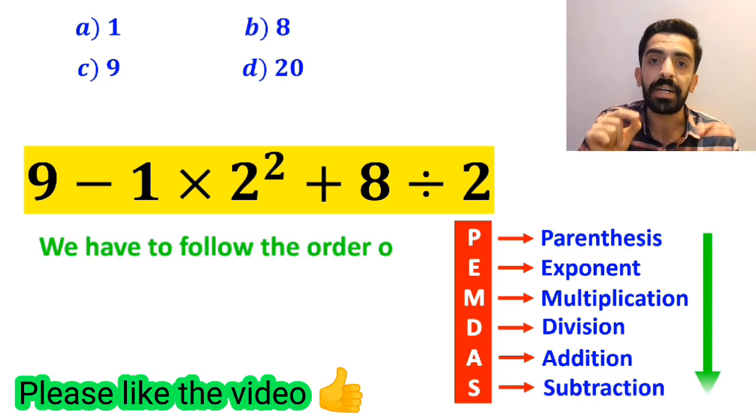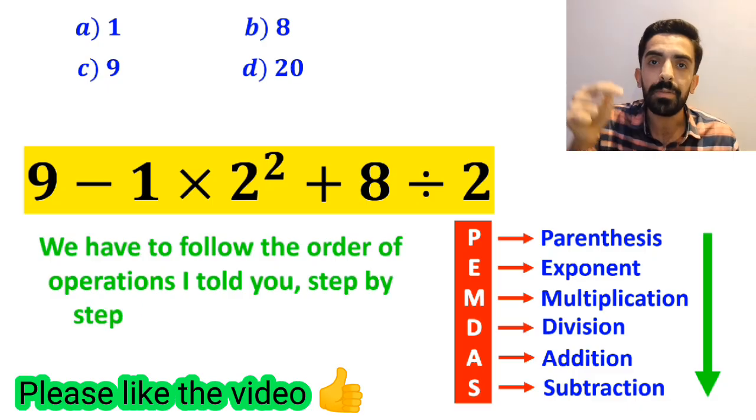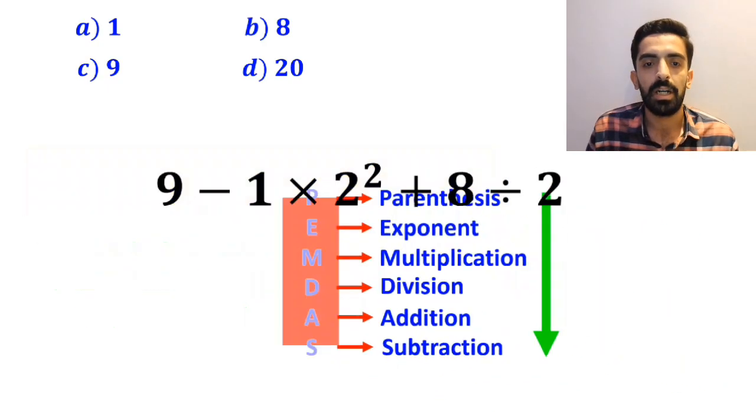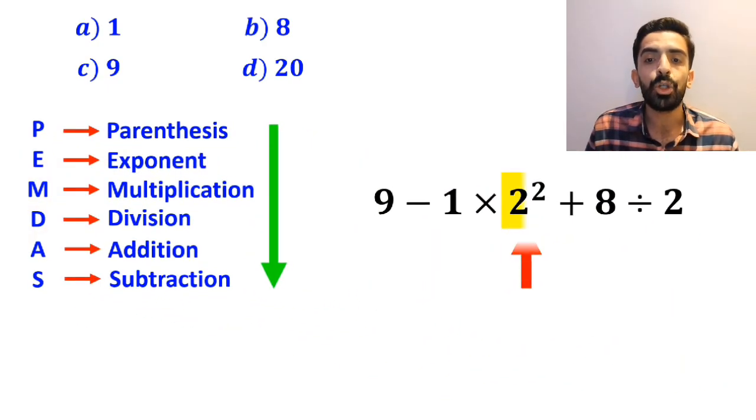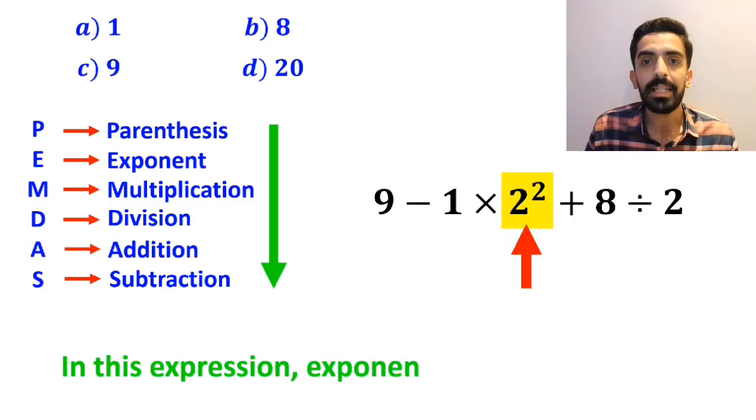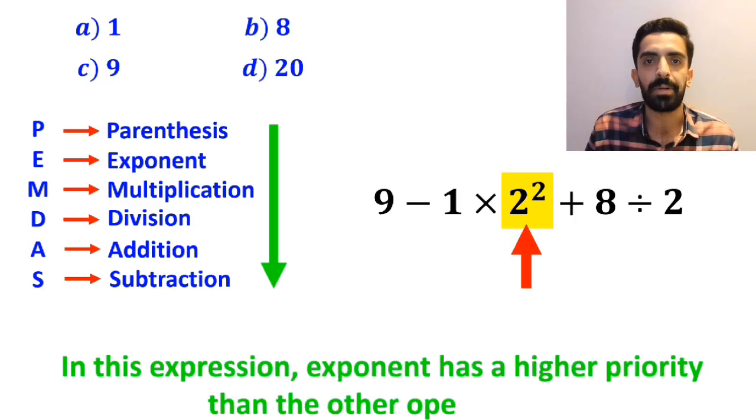We have to follow the order of operations I told you, step by step from top to bottom. Alright, first we start with 2 squared, because in this expression exponent has a higher priority than the other operations.